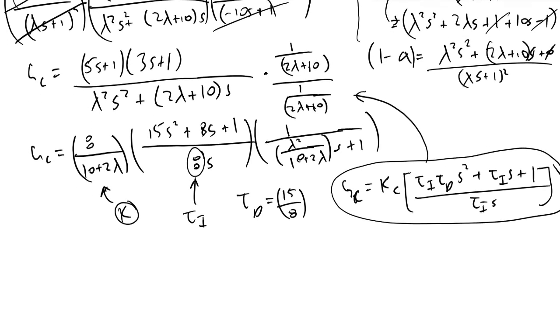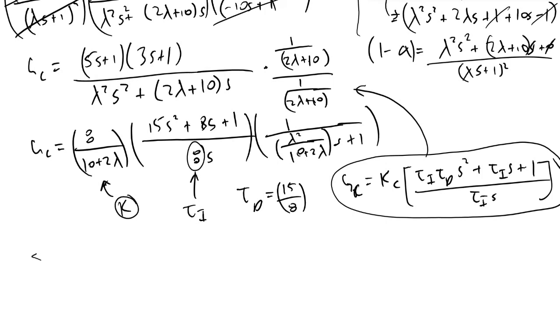A final note here: note that all tuning parameters are functions of lambda. This makes our job as a process control engineer a lot easier because we can very easily determine what the gain, the integral, and the derivative time constant should be just by manipulating lambda.